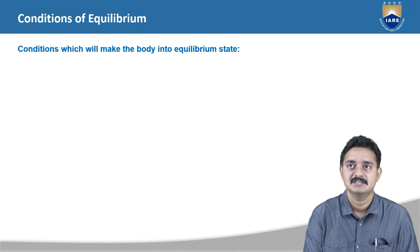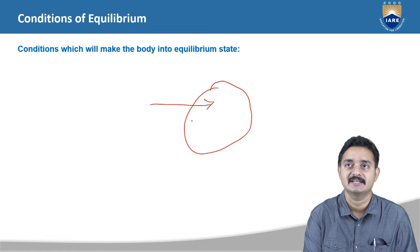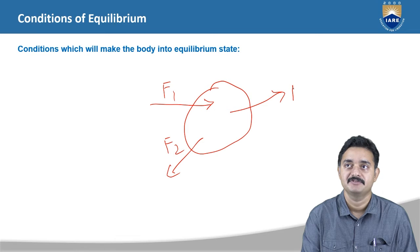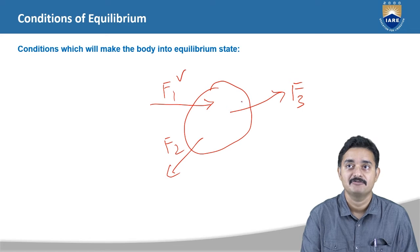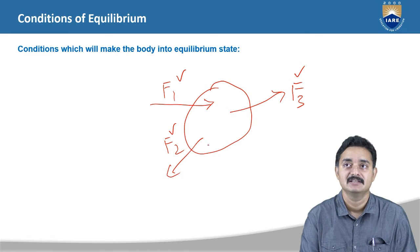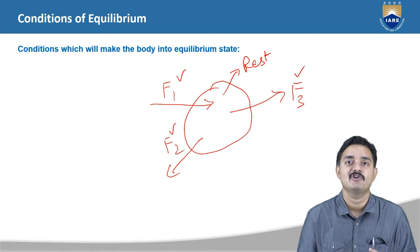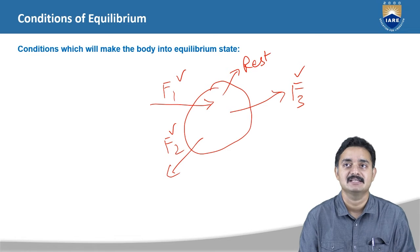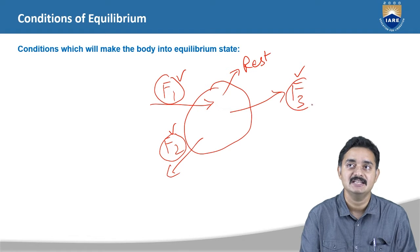If in a system, let us say this is an object and there are a number of forces acting — let us say F1, F2, F3 and so on — and even though these forces F1, F2 and F3 are being applied, the object is at rest. That means the object is not deforming or moving. Then we can say that under the action of these forces, the object is in equilibrium state.